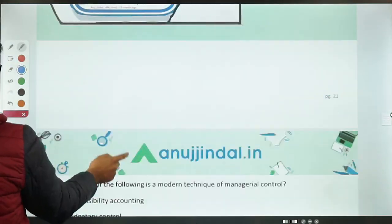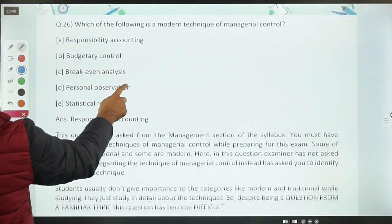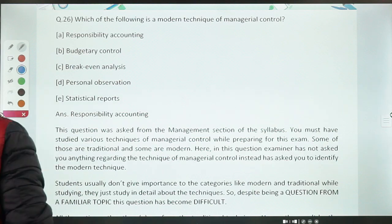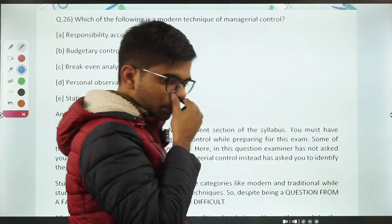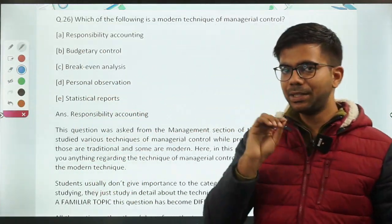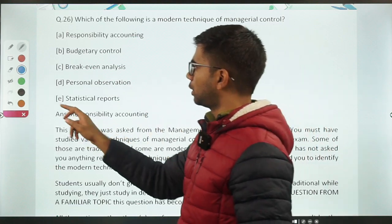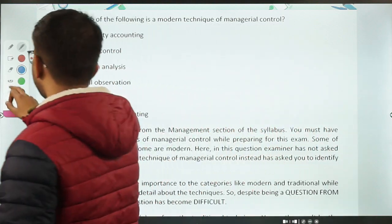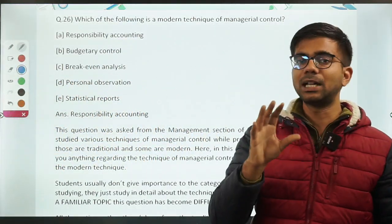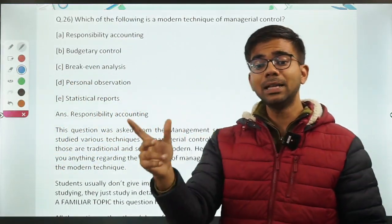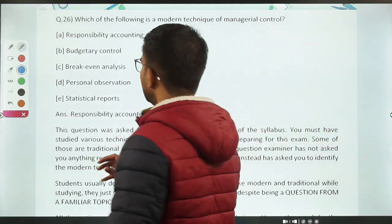Now let's continue from Question 26: which of the following is a modern technique of managerial control? Management has 5 functions: planning, organizing, staffing, directing, and controlling. The fifth function is controlling, and there are traditional and modern techniques of control.